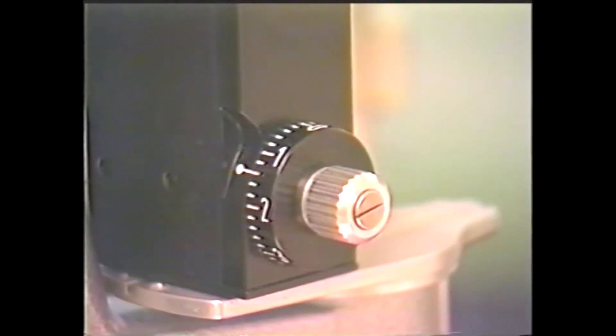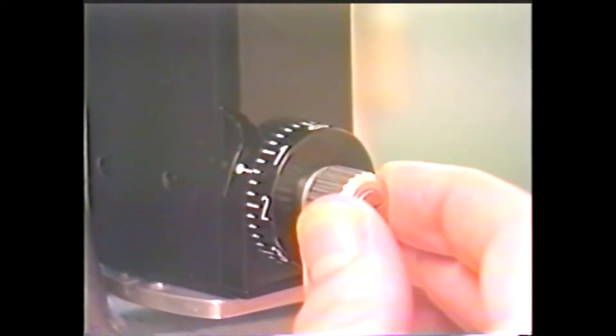Next, adjust the tonometer's knurled knob to apply the needed force to produce the endpoint: inner circle touching inner circle.